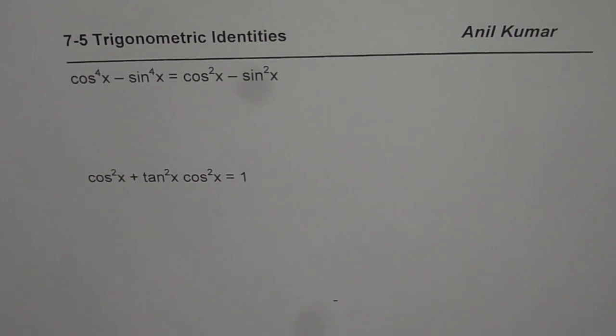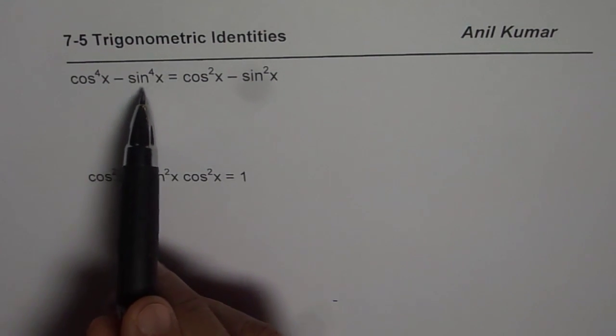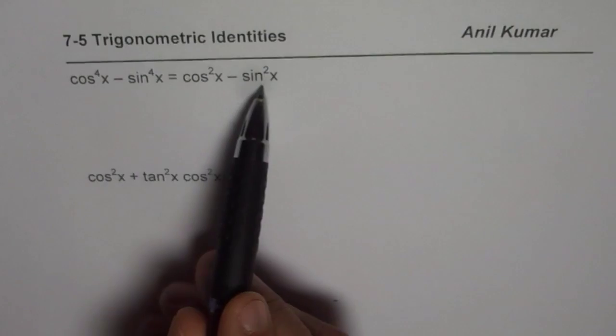Go through them very carefully. Now if you have a question like this which is cos to the power of 4x minus sin to the power of 4x equals to cos square x minus sin square x.